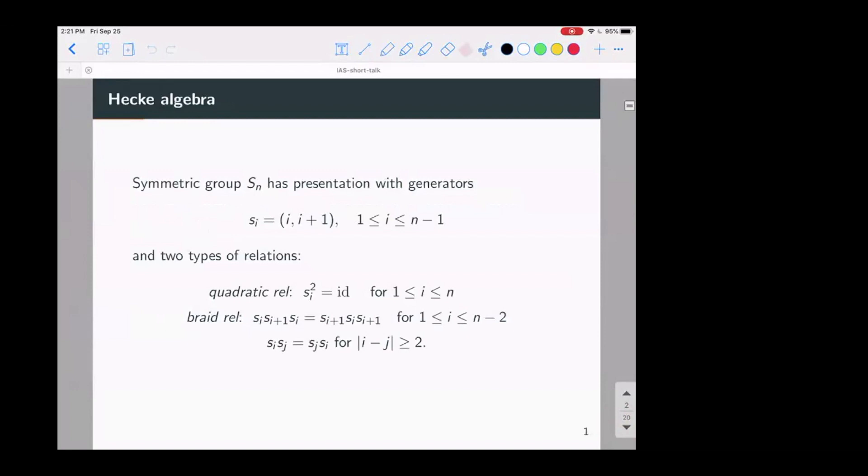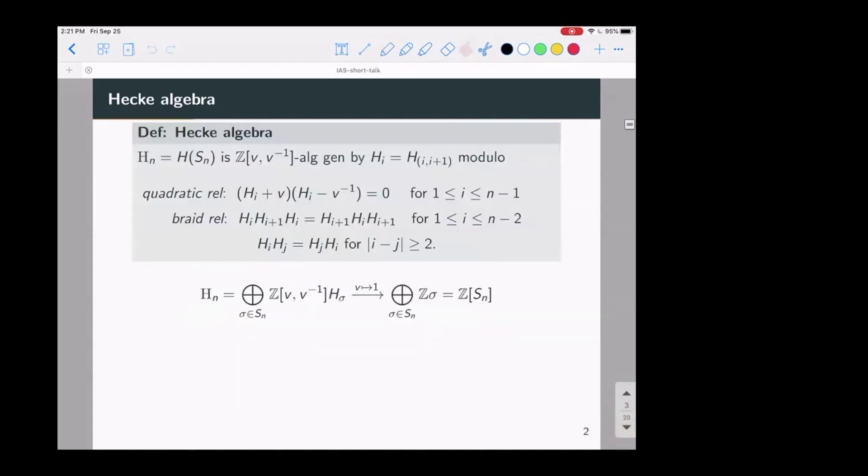The symmetric group has a presentation like this. You can take as generators simple transpositions and they satisfy or they square to the identity and then you have braid relations. The Hecke algebra is a deformation of the group algebra.